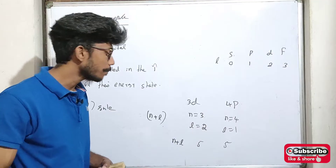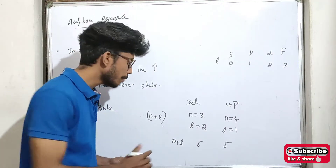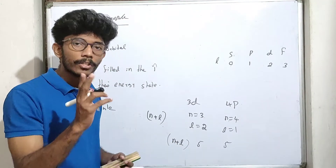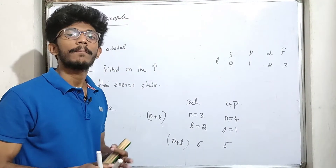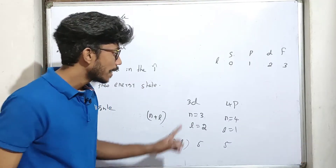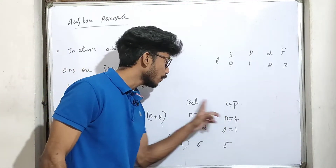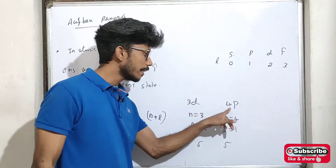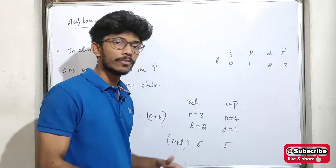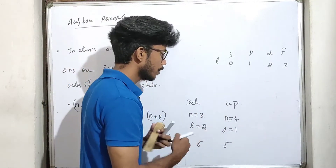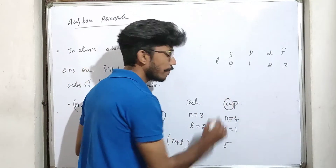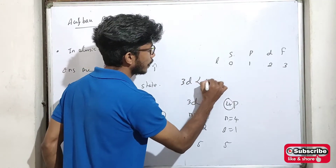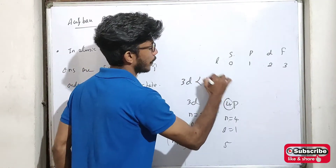When two atomic orbitals have the same N+L value, the orbital with the lower N value has lower energy. For example, 3d (N+L=5) has lower energy than 4p (N+L=5) because N=3 is smaller than N=4.